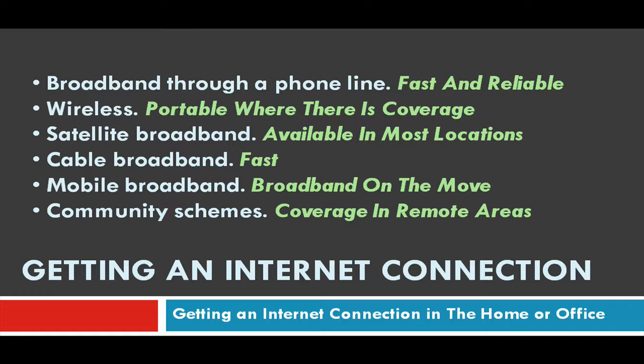Satellite broadband is available in most locations, but it does require the installation of a satellite dish and you may also need to have a phone line. Cable broadband is normally associated with cities and large towns — it's fast and you get your internet service through the same cables as your TV channels.